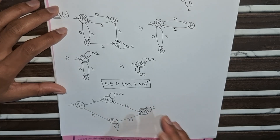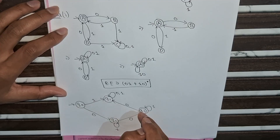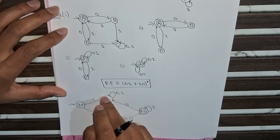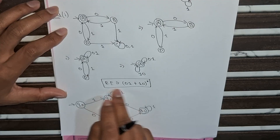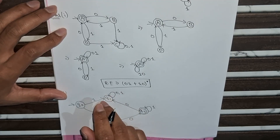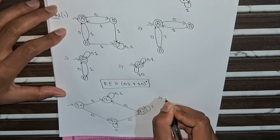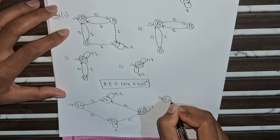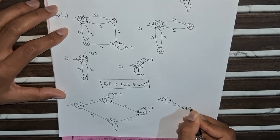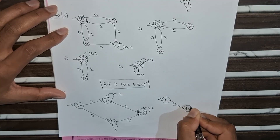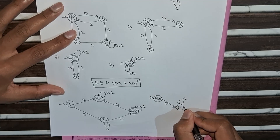From q0 with input 1 we reach q1, but we cannot reach the final state after reaching q1, so q1 is a dead state. We directly eliminate q1 from the finite automata. After elimination, it becomes: q0 with input 0 goes to q2, q2 has a self loop 1, and q2 goes to q3.